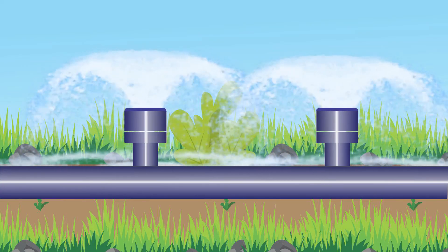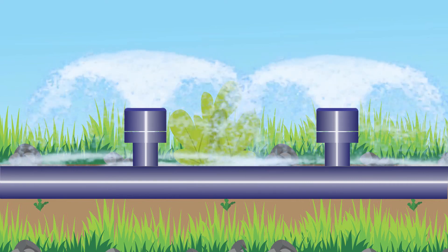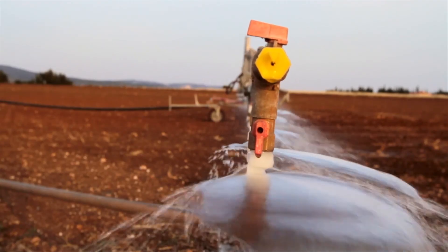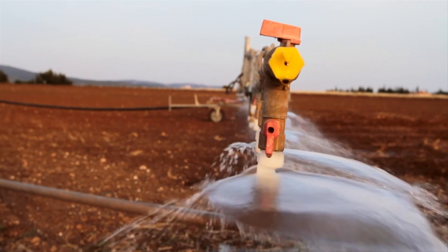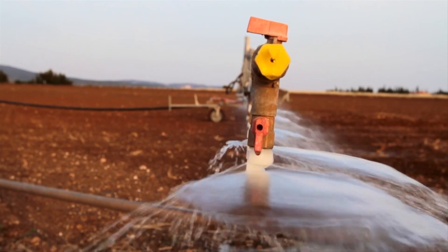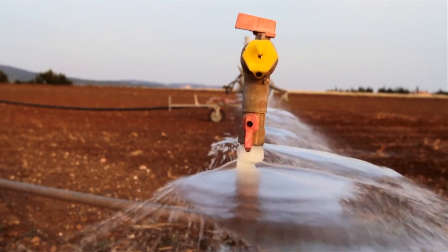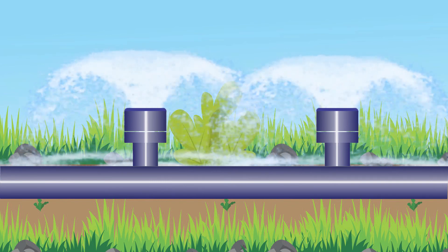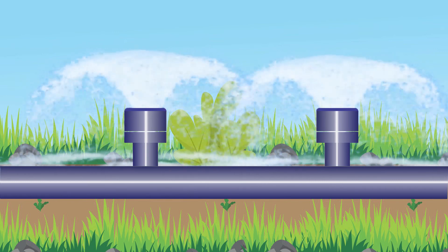Bubbler irrigation uses bubbler heads to irrigate bigger areas on a per-plant basis. Water from the bubbler head either runs down from the emission device or spreads a few inches in an umbrella pattern. A silicon diaphragm inside the emitter flexes to regulate water output and deflects water through small orifices. Bubbler emission devices are equipped with single or multiple port outlets and are available in adjustable flow and pressure-compensating types.